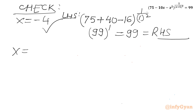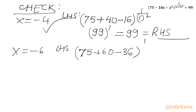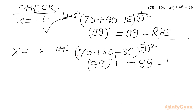Now for x equals negative 6: LHS is (75 + 60 − 36) raised to the power 1/(−6+5)². That gives 99 raised to the power 1/(−1)² = 1/1 = 1, which equals 99. This also matches our RHS. Hence this solution is also verified.